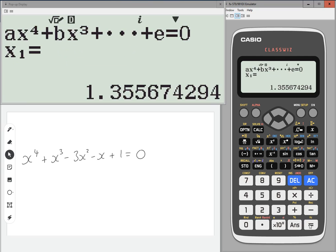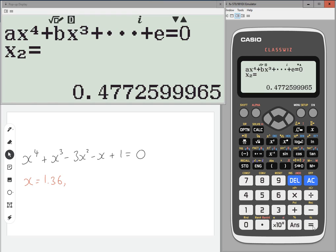Then just press equals, and our first solution—I'll write these to three sig figs—1.36, press equals again, 0.477, press equals again, minus 0.738, and press equals again, minus 2.10.